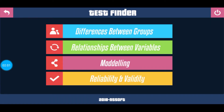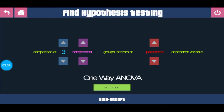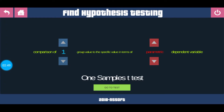Now depending upon your data, your objectives, and your research, you will have to select one of these options. For example, if you want to calculate the differences between groups, then select this one. Here they have shown three options. The first option on the leftmost side is the comparison of how many groups. The default value selected is 2, but you can change it to 3 or 1. By changing the value, you can see the test you will be using for analysis appearing at the bottom of the screen. With the value set to 1, the test shown is one-sample t-test.